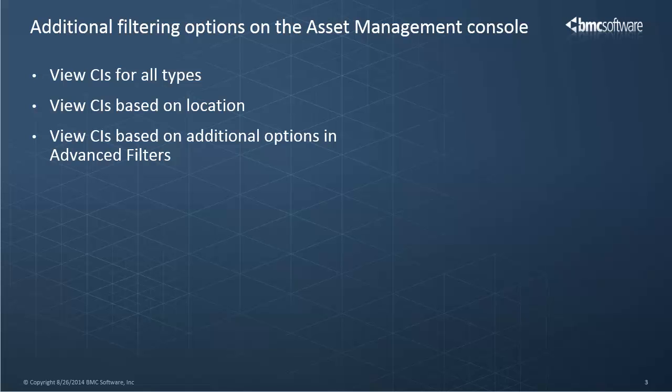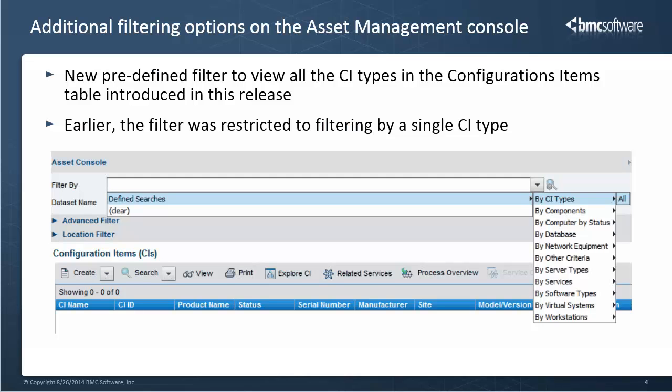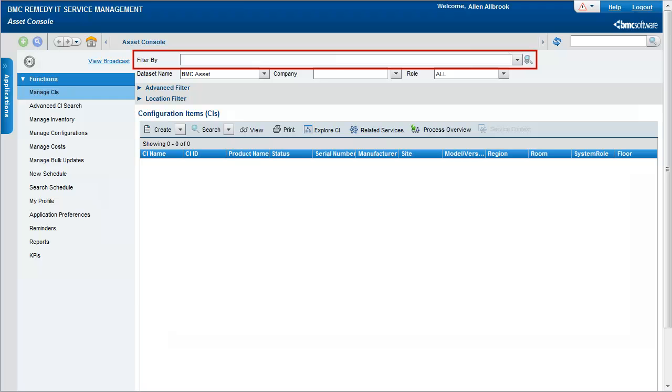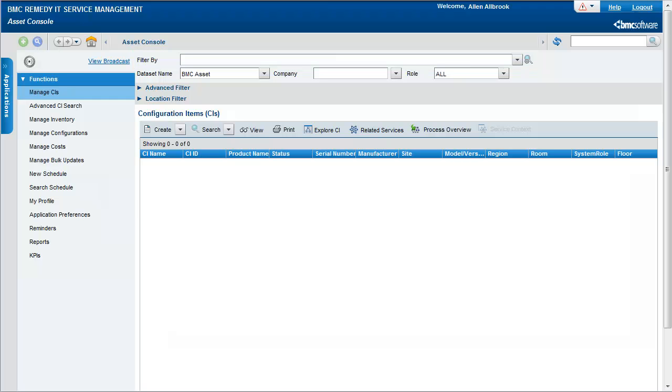Additional filtering options have been added to the Asset Management Console. These include filters for viewing all the CI types, filters for viewing CI based on selected location, and an additional field option for advanced filters. Now with the new predefined filter, you can view all the CI types in the configuration item table. This is an addition to the existing predefined filters for viewing each CI type. To view all the CI types, select the 'All CI types' option from the Filter by drop-down list.